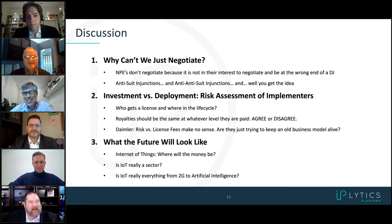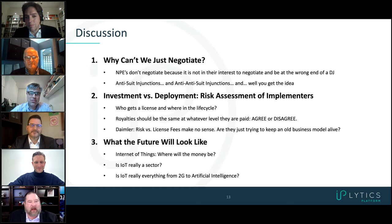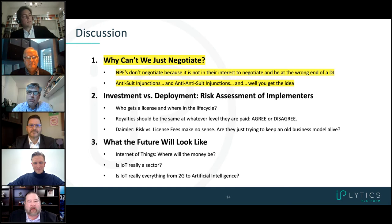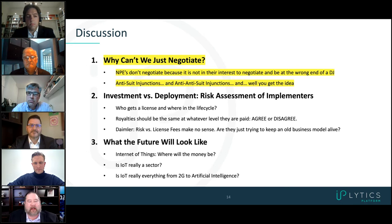So now I think I may have mismanaged the clock. We may not have as much time for all of this, but I think we've already talked about everything except for item number three, so we can maybe move a little bit faster. The first topic is why can't we just negotiate? This comes from the conversation that Clemens and I had when we were setting up this webinar. Clemens, why can't we just negotiate?